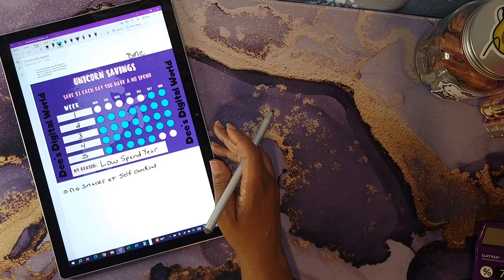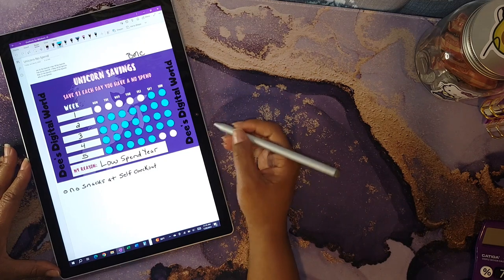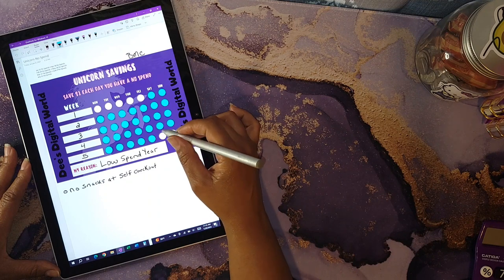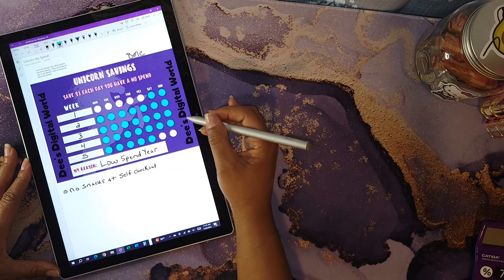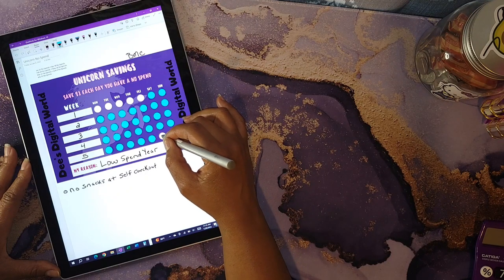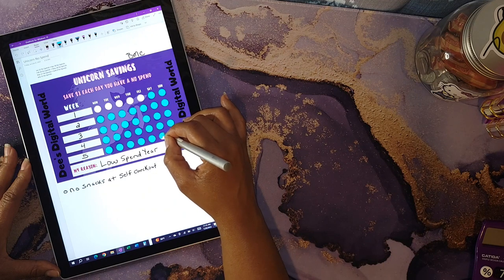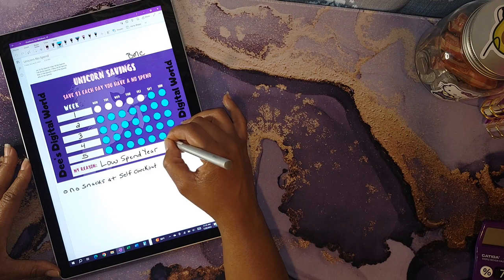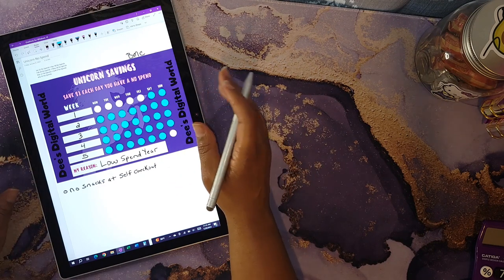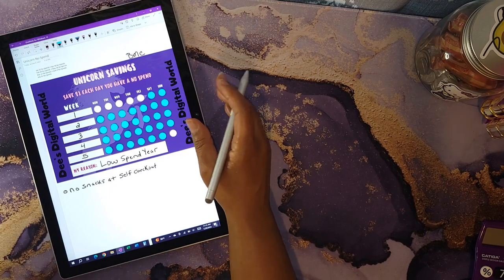I did my no-spend for the month of July, and probably throughout the remainder of the year, will include not spending on snacks at self checkout. This is one of my areas where I was overspending in the prior years. Since my income is reduced significantly right now, I decided to do a low-spend year. I am excited to say I have not bought any snacks at self checkout. Today is Saturday that I'm recording this video.